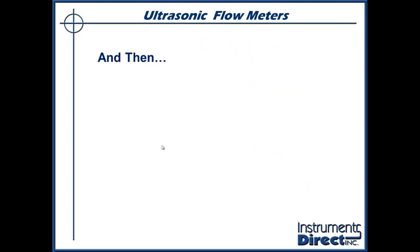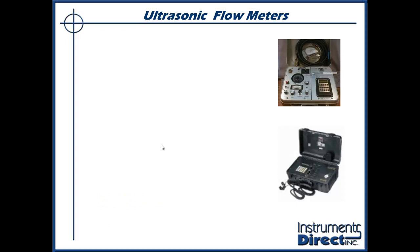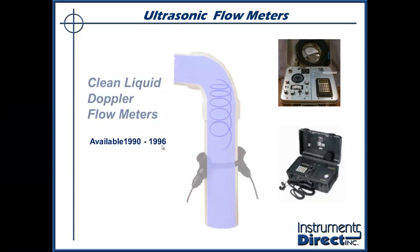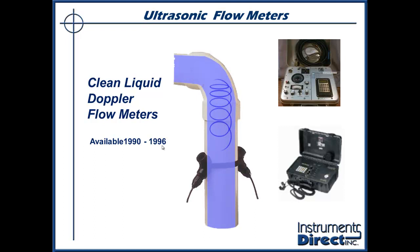Back in the old days when Doppler flow meter manufacturers were trying to keep up with transit time technology, Polysonics and Dynasonics came out with something called a clean liquid Doppler. These devices were only around in the early 90s. Basically, they put a hearing aid on an ultrasonic Doppler and placed sensors at a 90-degree elbow to reflect off turbulent flow. They weren't very accurate — it was a stepping stone from Doppler to transit time technology. They are not around anymore. Cross clean liquid Dopplers off your list.